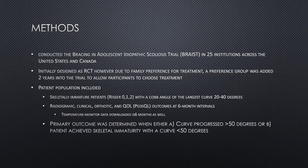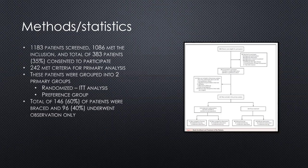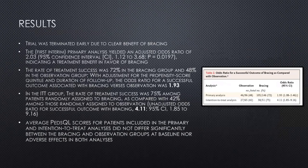The primary outcome was to determine curve progression above 50 degrees versus achievement of skeletal maturity without reaching 50 degrees. About 1,183 patients were screened, of whom 1,086 met inclusion criteria and 252 met criteria for the primary analysis. These were grouped into randomized and preference groups. A total of 60% — 146 patients — were braced, and 96 or 40% underwent observation only. They followed patients over time to assess changes.